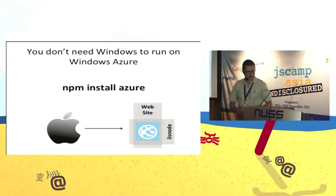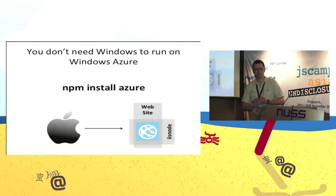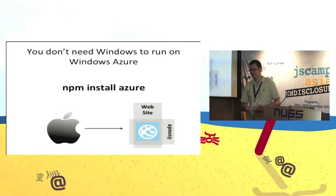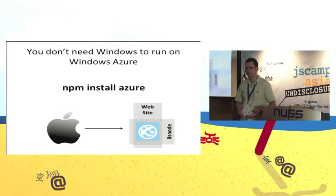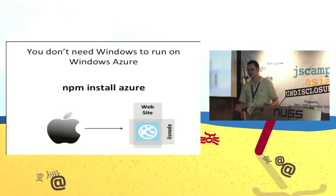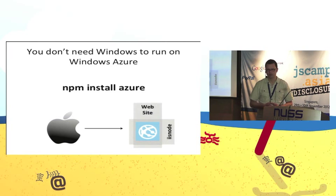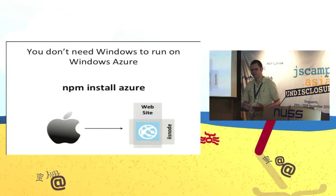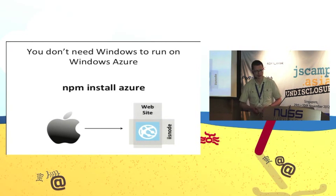Let's look at how you actually deploy a Node.js application to Windows Azure. The key point is you don't need to develop on Windows — you can develop on Mac, Linux, or whatever environment you want. To make it easier, we've shipped a cross-platform tool written in Node.js which you can install via npm install azure. Once installed, it enables you to perform management operations against Windows Azure, including creating websites, VMs, and hosted services.